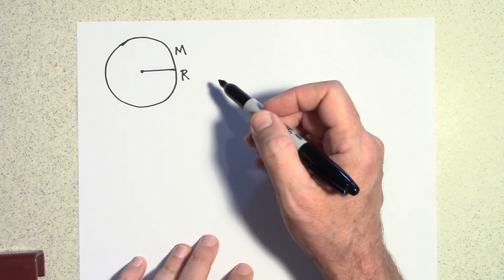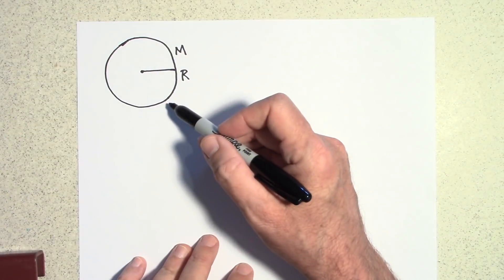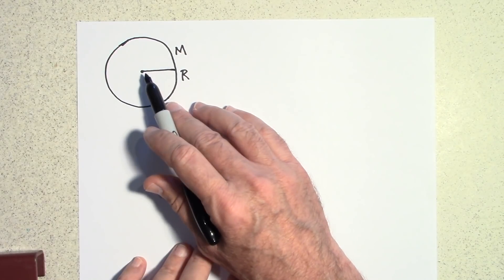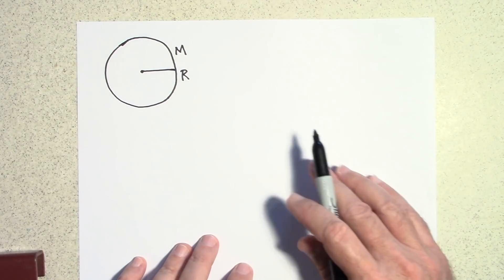Incidentally, if this mass is all at the edge, if this is a hoop, then it would just be I would equal mr squared because all the mass is a distance r away. So it would just be mr squared.